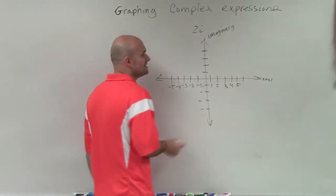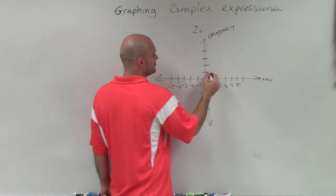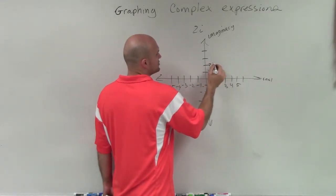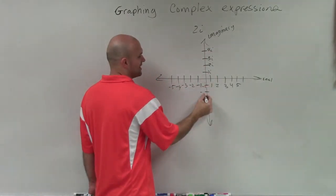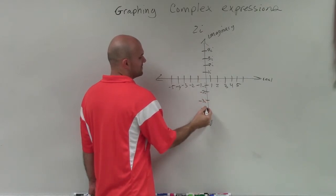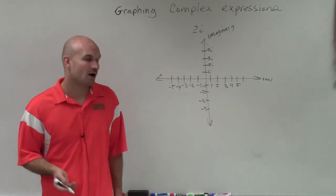Now the only difference is, since this is imaginary, this will be 1i, 2i, 3i, 4i. Down here is negative i, negative 2i, negative 3i, and negative 4i.